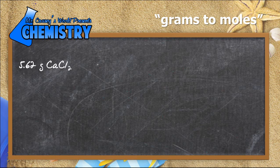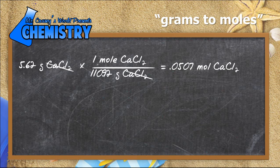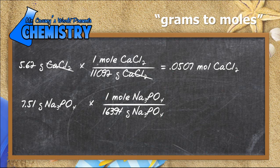So now let's change grams to moles using those numbers. 5.62 grams of calcium chloride is going to convert—notice I did my unit analysis—into 0.0507 moles of calcium chloride.